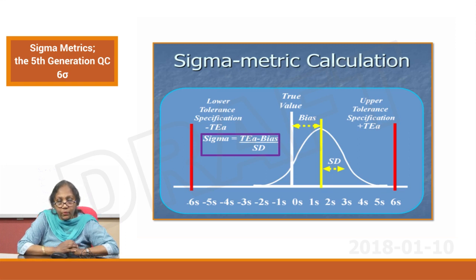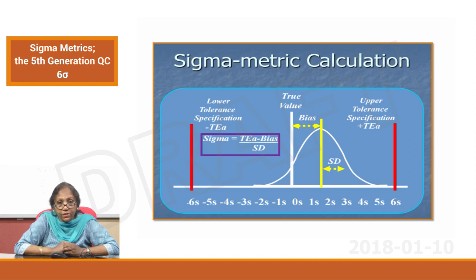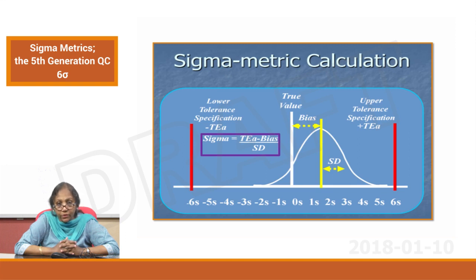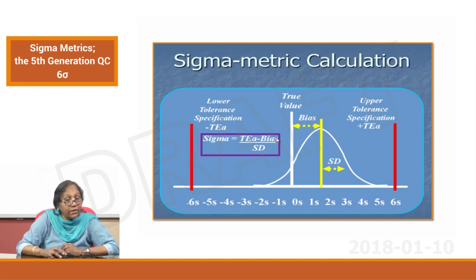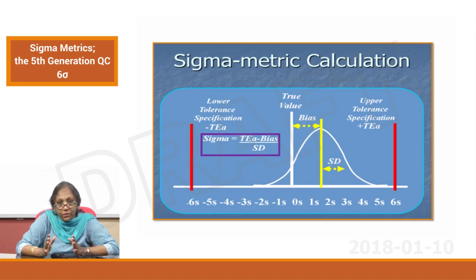At this point I want to stop and tell you one thing. We have talked about calculating the bias and now calculating the sigma — it might sound a little overwhelming. But you really do not need to worry — these are very simple calculations. All you need to do is find out your CV percent or your SD, and understand your bias. That is something you get from your peer group data. When you are getting your internal quality control program, please make sure your IQC provider will give you peer group data, because bias becomes a very key element — without the true value or target value you cannot really calculate it.